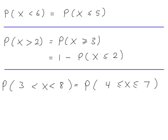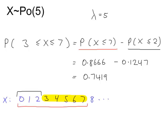So we've seen the basic requirements for a Poisson distribution: events must be random, independent of each other, occur at a constant average rate, and there must be no upper limit to the number of events. And we've worked through the basic calculations associated with the Poisson distribution.